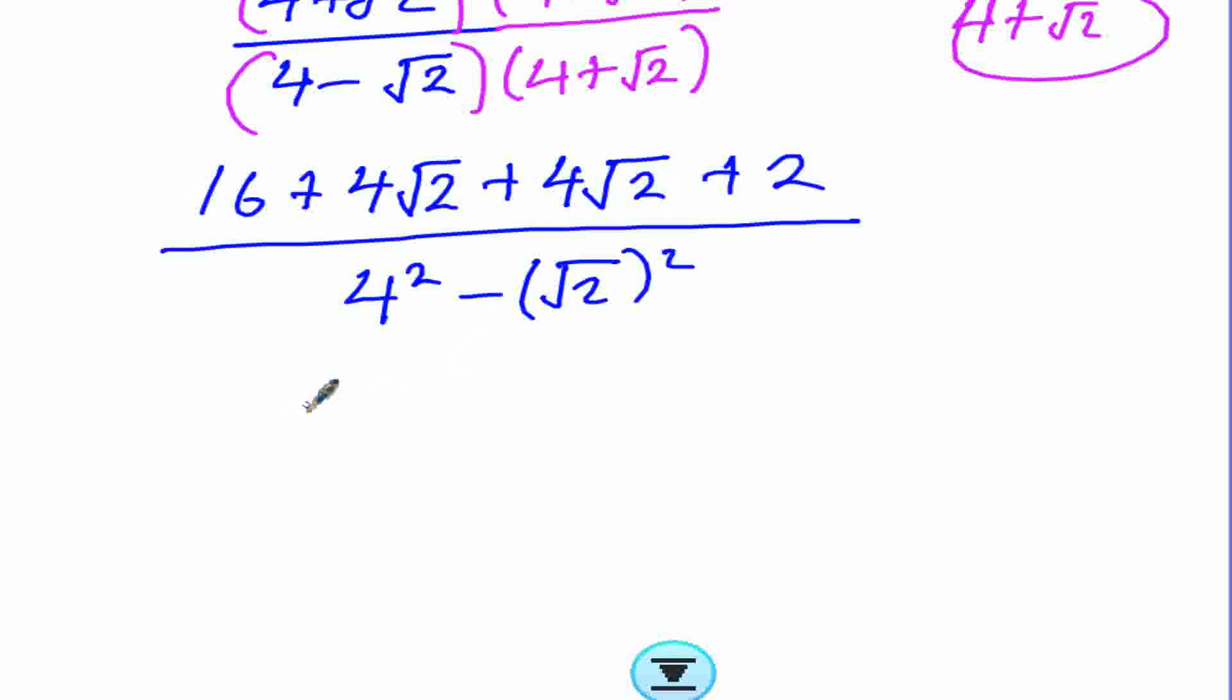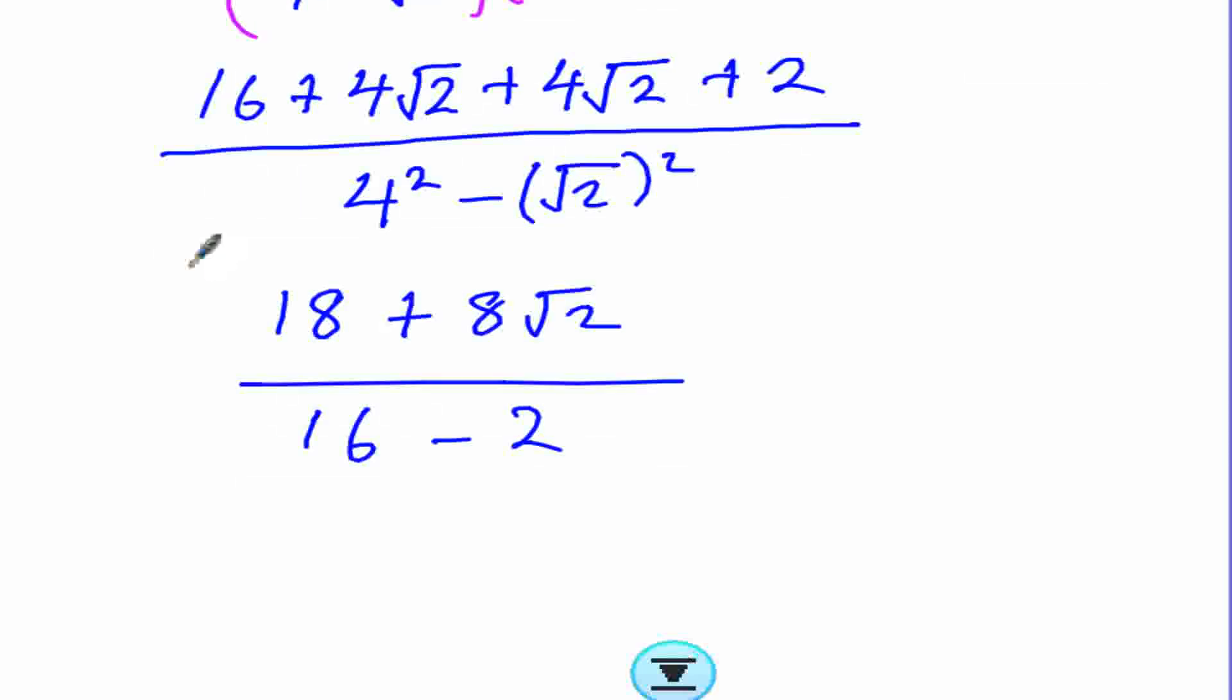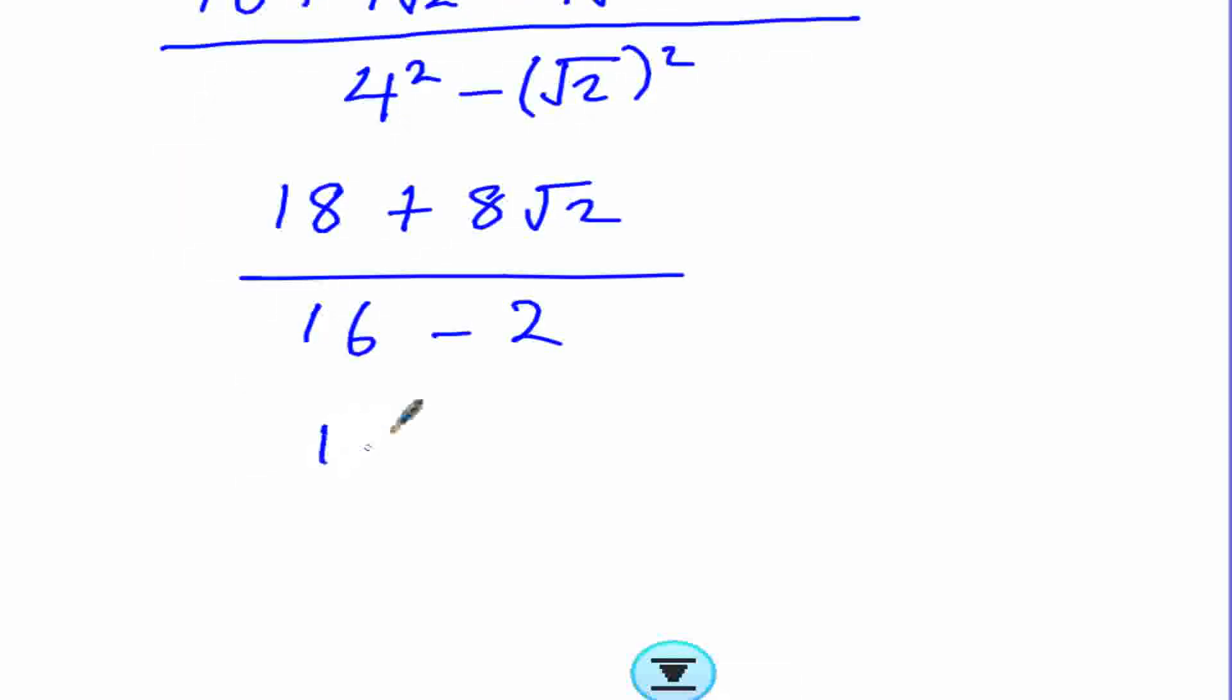We are adding the rational numbers which will give us 18, then plus the irrational numbers, that is 8 root 2 over 16 minus 2. This remains 18 plus 8 root 2 over 14. At this point we can reduce by dividing the numerator by 2 and the denominator by 2.